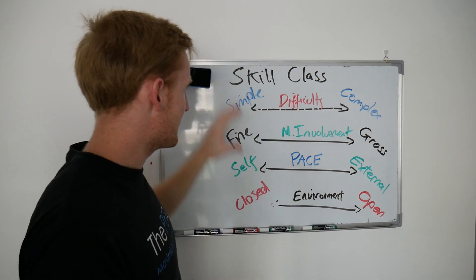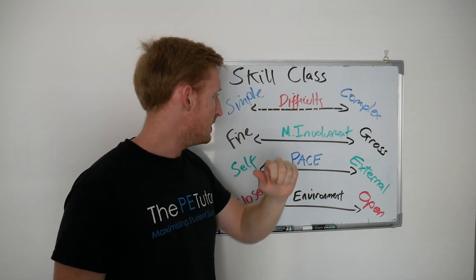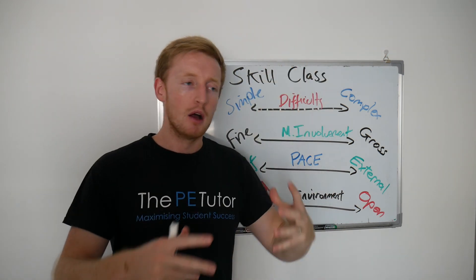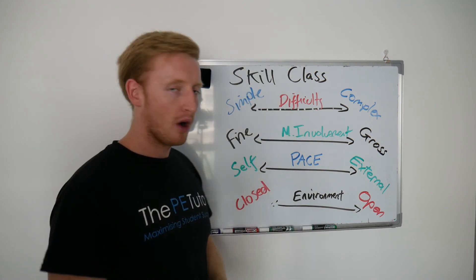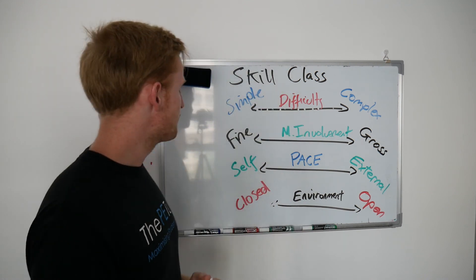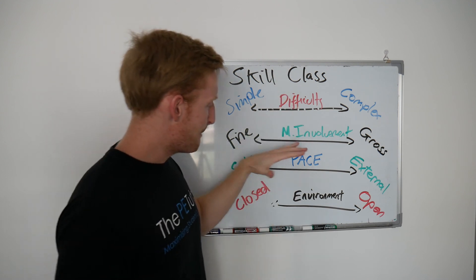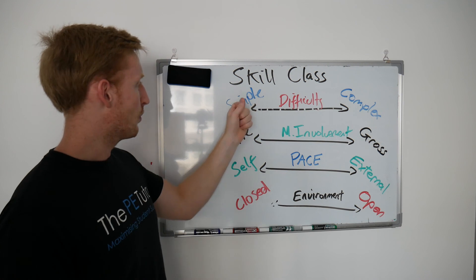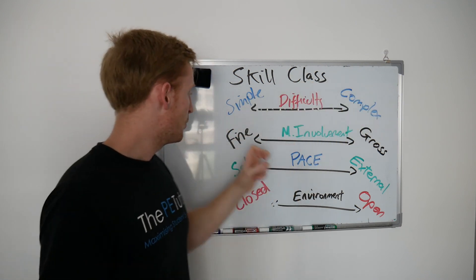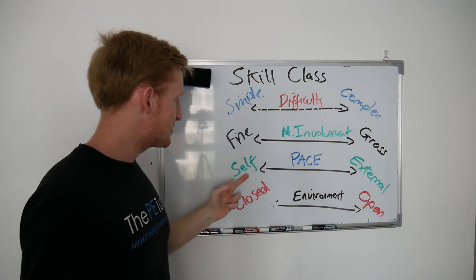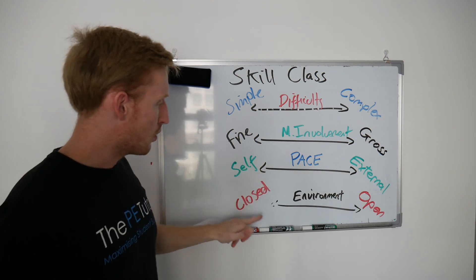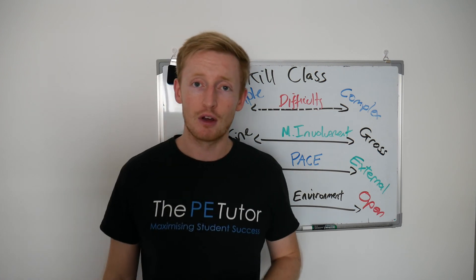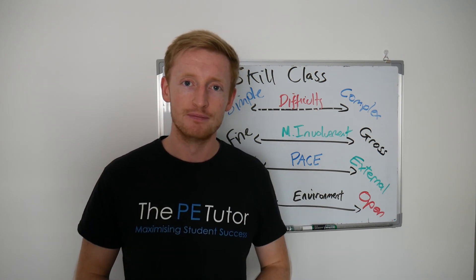And that is skill classification within PE. We've got our four main continua - there are others, but for your course these four are the main ones you will definitely need to know. We've got difficulty, muscular involvement, pacing, and environmental influence. At either end of those we've got simple and complex, fine and gross, self-paced and externally paced, and closed and open. I hope that was of use, and I look forward to seeing you again soon. Bye for now.